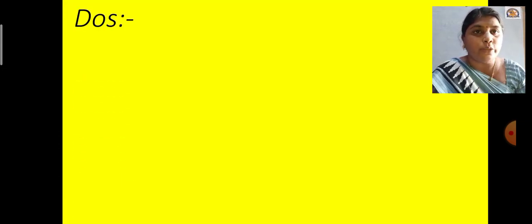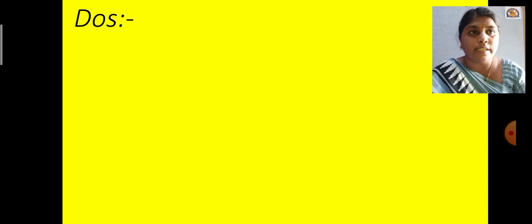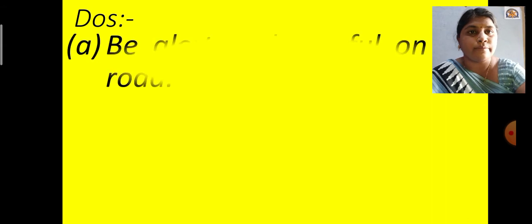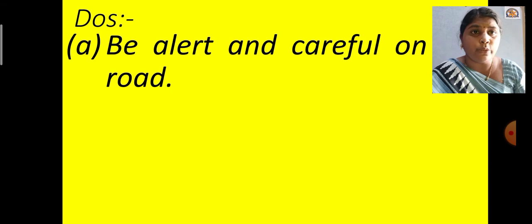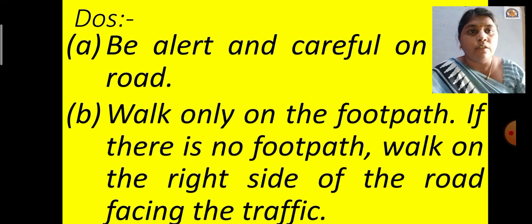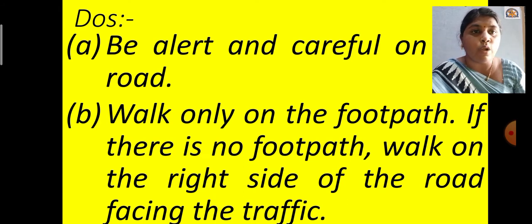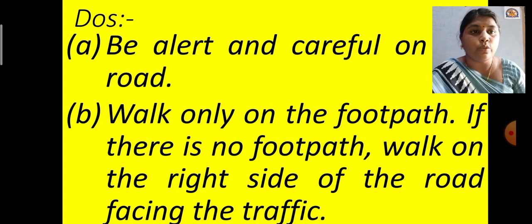Now what we have to do — the dos means what is correct, what we have to follow. Number A: be alert and careful on the road. If we have to protect ourselves from any accident, we have to be always alert and careful. Number B: walk only on the footpath. When walking on the road, walk only on the footpath. If there is no footpath, then walk on the right side of the road facing the traffic.